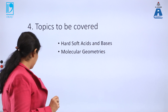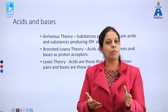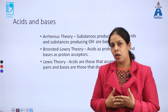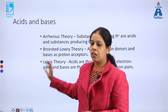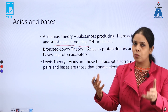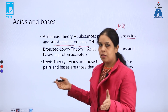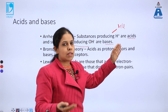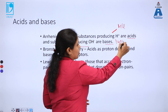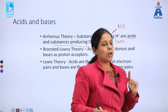We are discussing hard and soft acids and bases. Before discussing what these are, let's discuss what acids and bases are in general. Different theories define acids and bases in their own terms — no theory is incorrect. For example, Arrhenius theory says substances producing H⁺ are acids and substances producing OH⁻ are bases. HCl, nitric acid, and sulfuric acid all liberate H⁺ ions, while NaOH and KOH liberate OH⁻ ions and are bases.